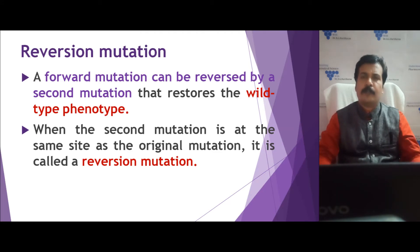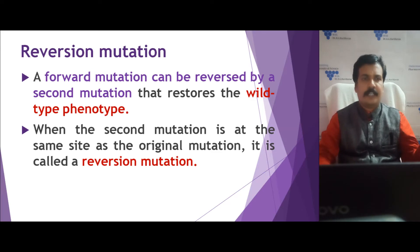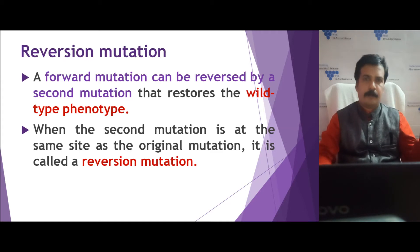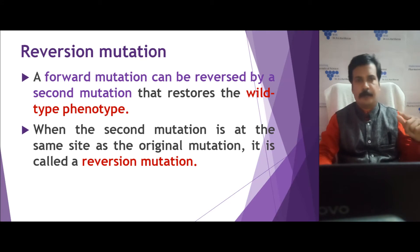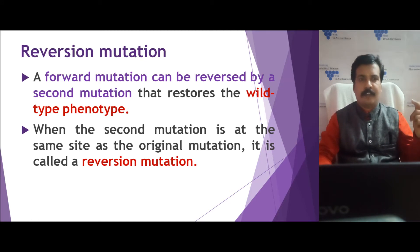There are two types of reversion mutation possible. One is called true reversion, and the second is equivalent reversion. The same mutation can lead back either to a wild type or to another mutant type. Based on this, we classify into true reversion and equivalent reversion.